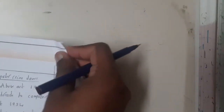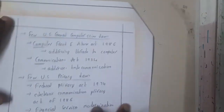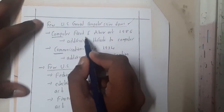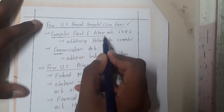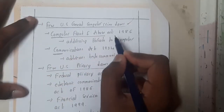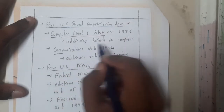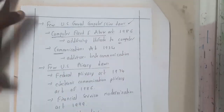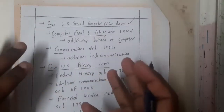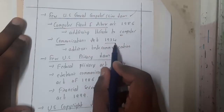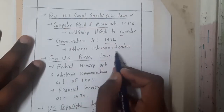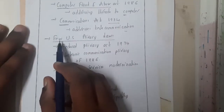Now let us continue with some U.S. laws. The first is the Computer Fraud and Abuse Act of 1986, which addresses threats related to computers — similar to the computer threats we discussed in our last lectures. Similarly, the Communications Act of 1934 addresses telecommunications.